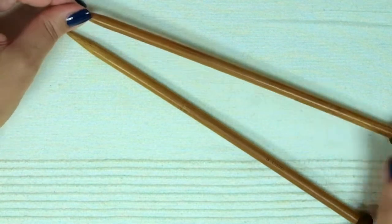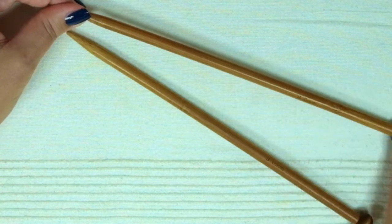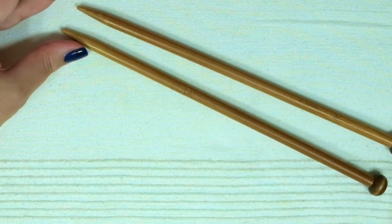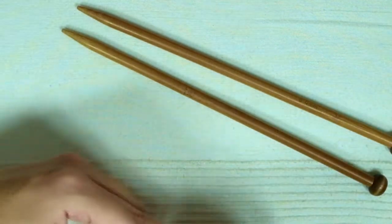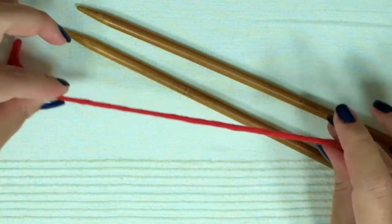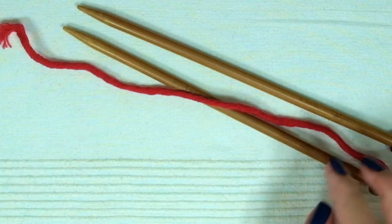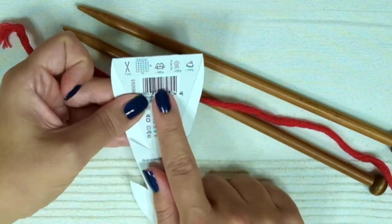Today I'm using big needles, US size number 11, UK size number 0, or 8 millimeters, and grab yarn accordingly. You'll find the manufacturer's recommendation on the label for the appropriate needle size.